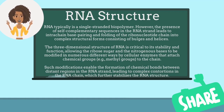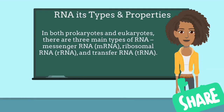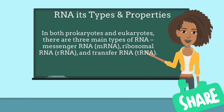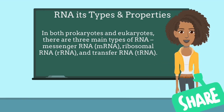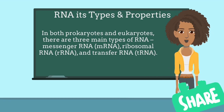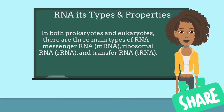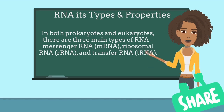The three-dimensional structure of RNA is critical to its stability and function. In both prokaryotes and eukaryotes, there are three main types of RNA: messenger RNA (mRNA), ribosomal RNA (rRNA), and transfer RNA (tRNA).